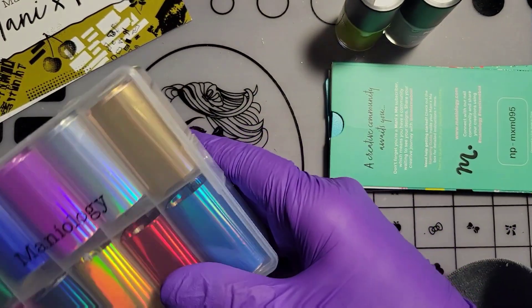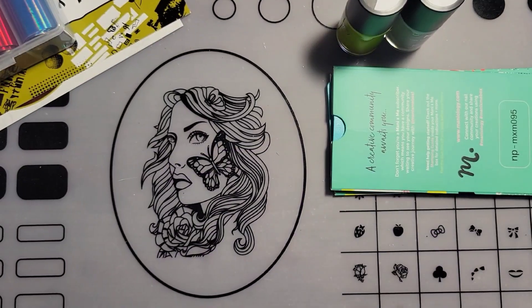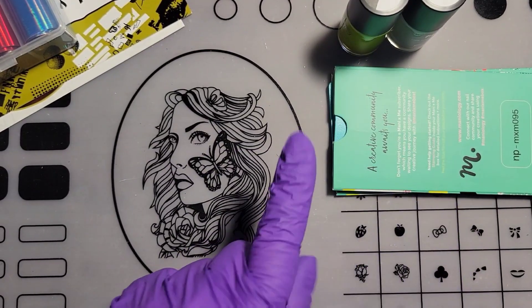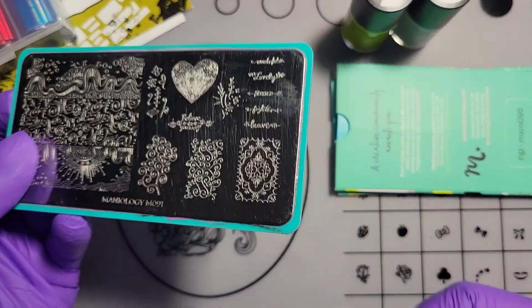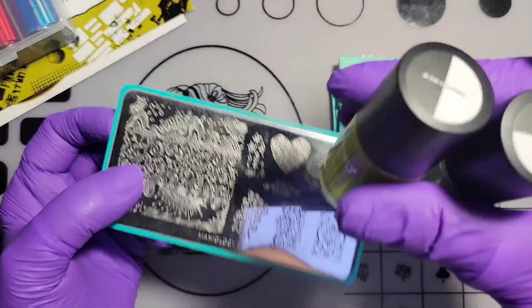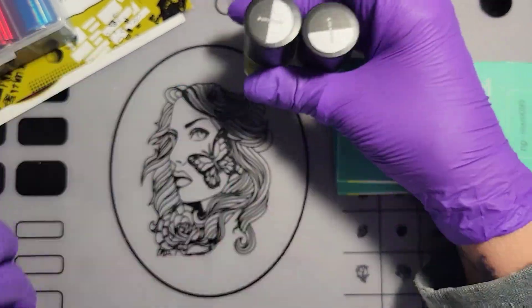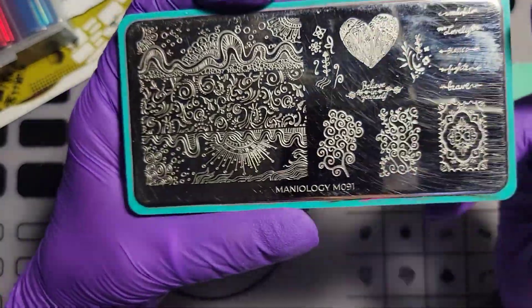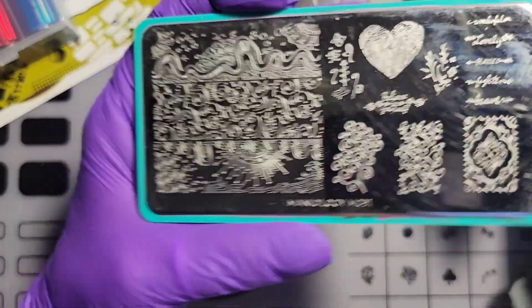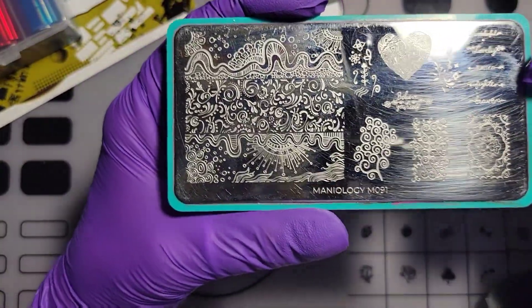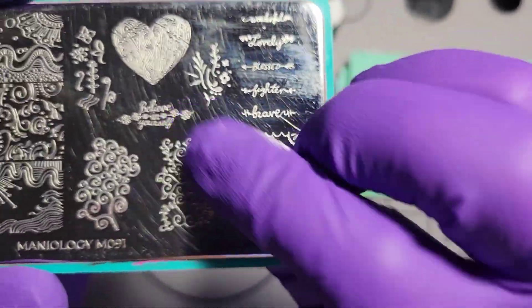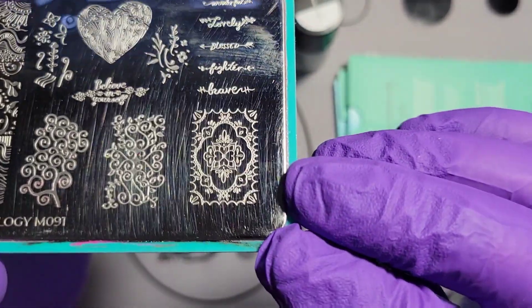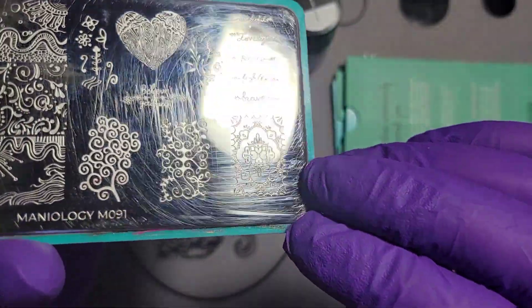I'm just gonna move those over there. I'm gonna grab my stamping plate. So I always use the same stamping plate when I put the stamp on the top. This is a plate Maniology did several years ago now, create your own image, and this image is my image. So I sent that in and there you go, I've used this plate a lot.